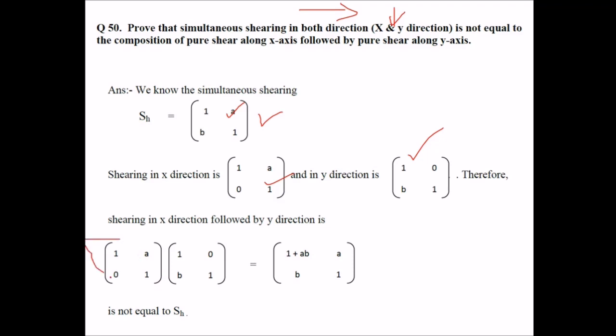The simultaneous will be, we just multiply, this will be 1 plus ab, and this is not equal to Sx, so this is not equal to Sh.